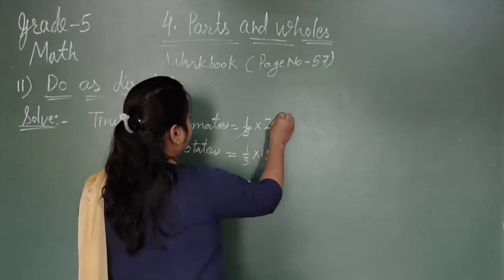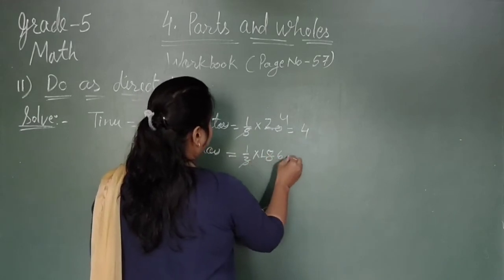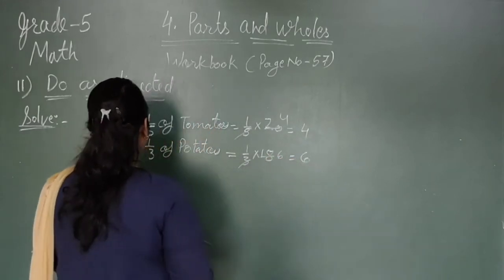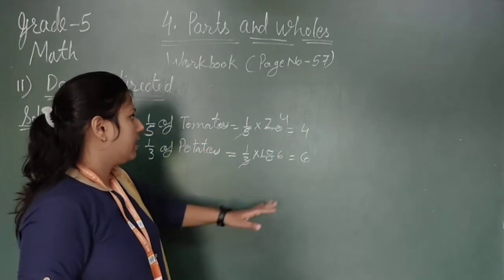So solve this. Five fourths are 20, four fourths are 4. Three-sixths of potatoes, fourths of tomatoes means four fourths are 6.